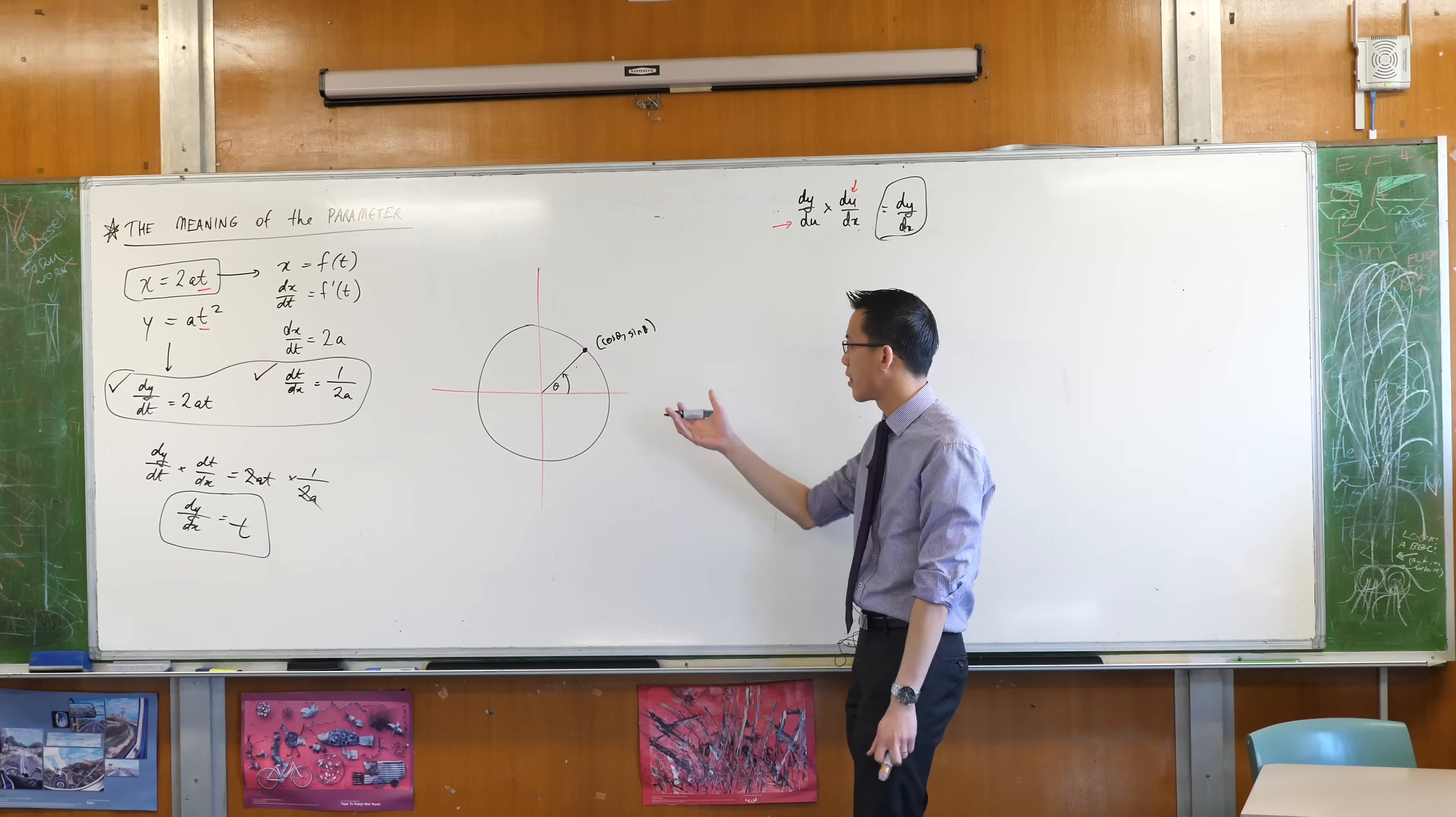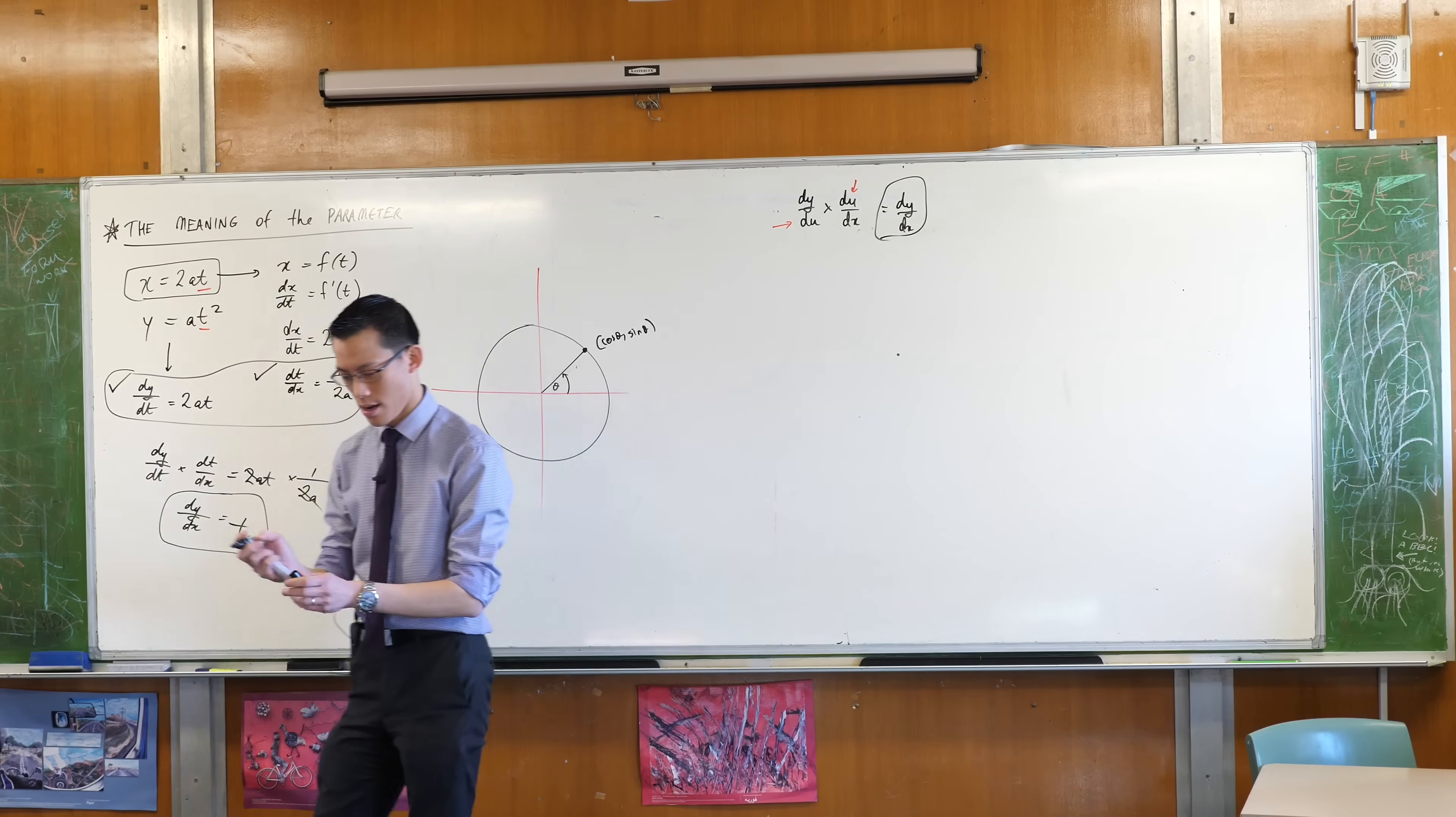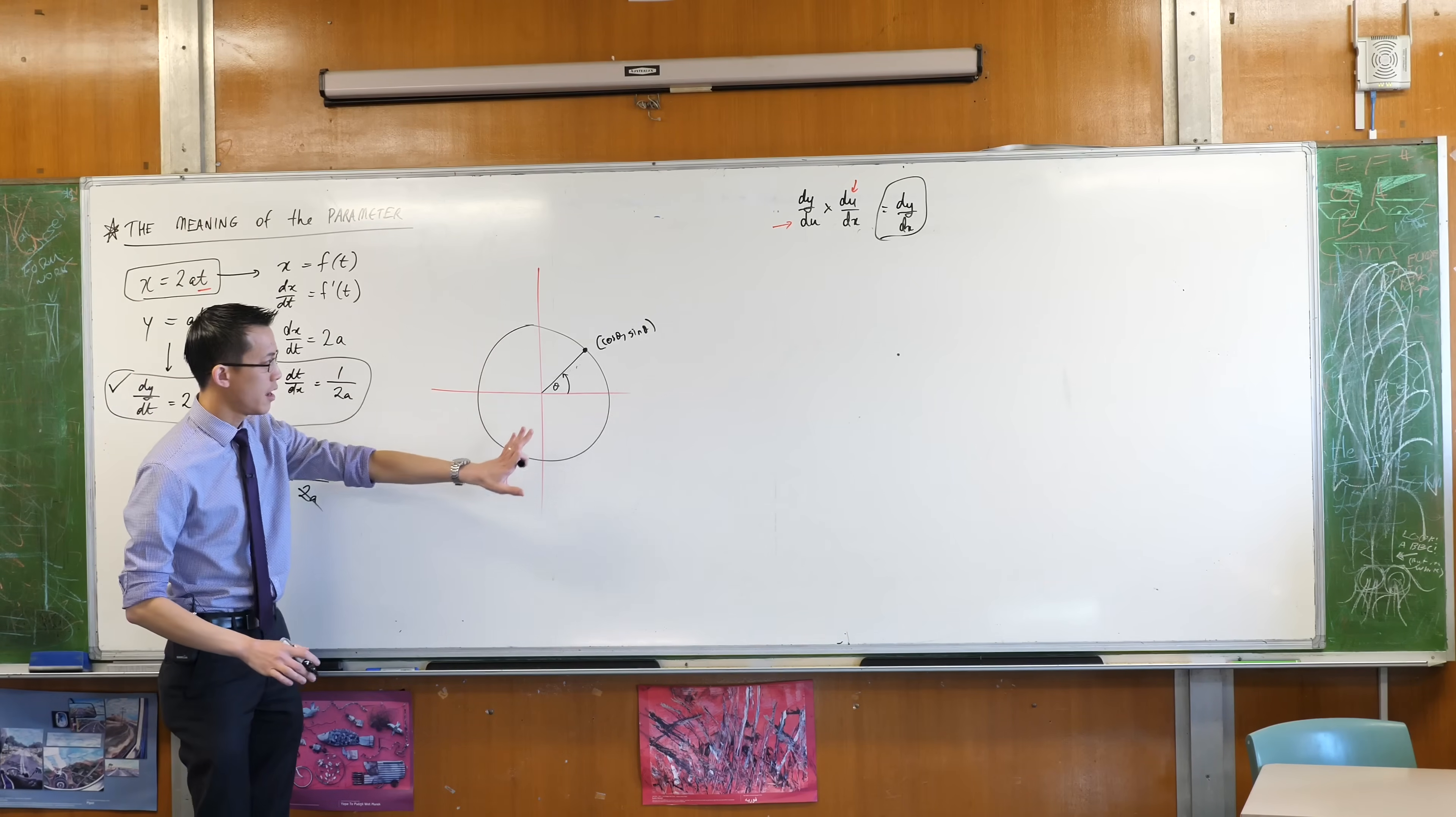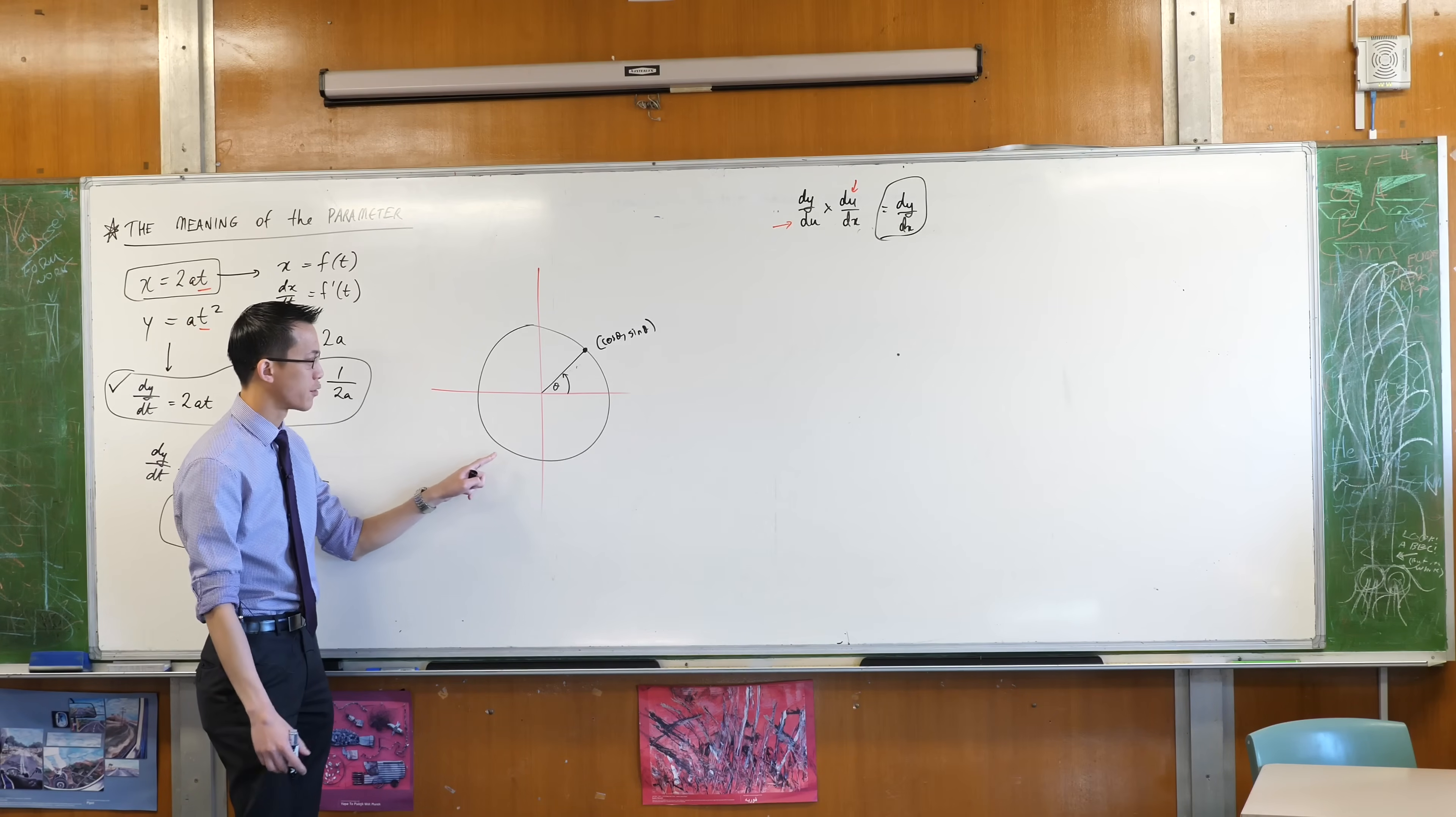Now, why did we choose θ as the parameter? Because you don't have to choose θ, you can choose other things. Why did we choose θ as the parameter? And the answer is, in this case, if I give you θ, like, say, 190 degrees,